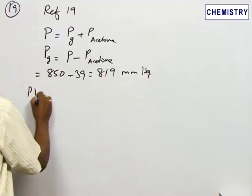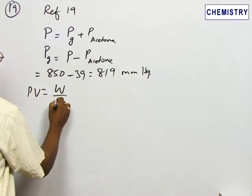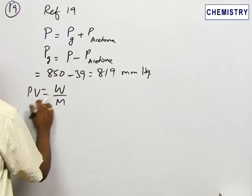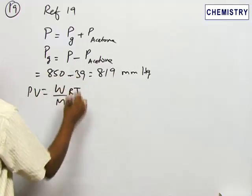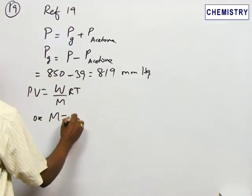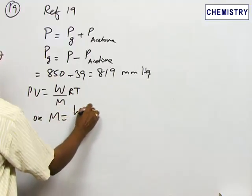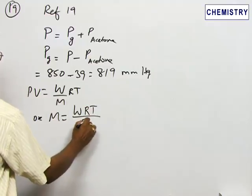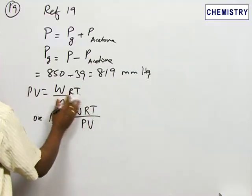PV is equal to W by M, RT. This is obtained from ideal gas equation. Or M is equal to WRT by PV. From this equation we are rearranging.